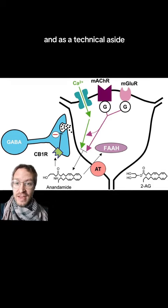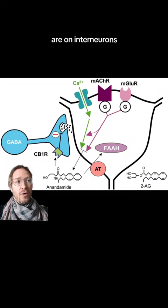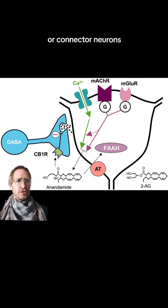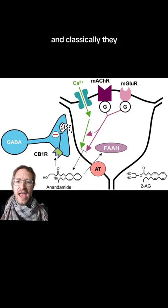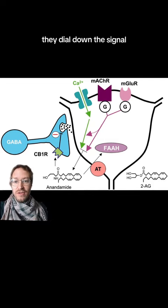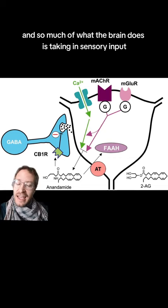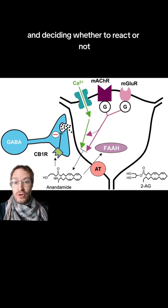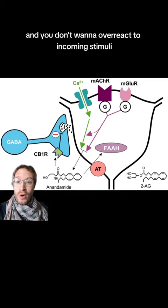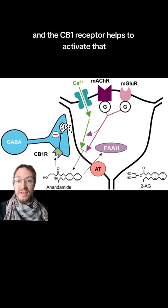As a technical aside for those interested in neural wiring, the type of neurons they are on are interneurons, also known as relay neurons, connector neurons, or intermediate neurons. Classically, they insert themselves into a neural circuit and, if activated, dial down the signal. So much of what the brain does is taking in sensory input and deciding whether to react or not. You don't want to overreact to incoming stimuli — that is a general purpose of what GABA does, and the CB1 receptor helps to activate that.